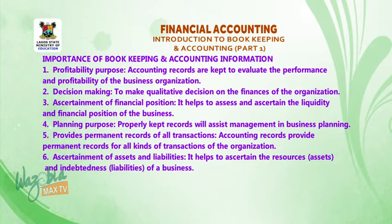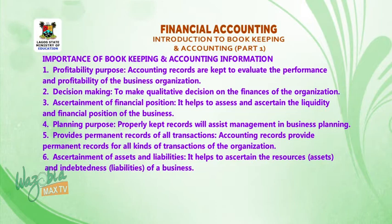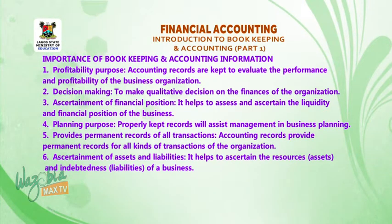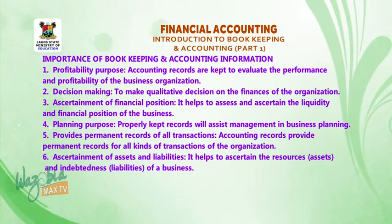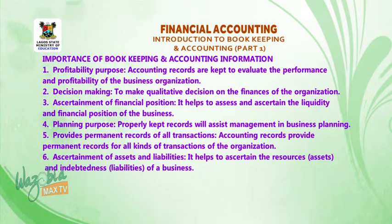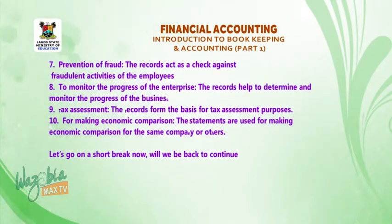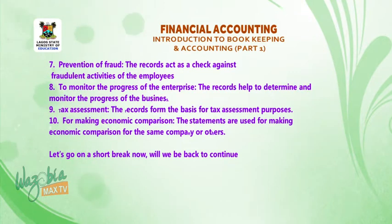Four, planning purpose: properly kept records will assist management in business planning. Five, permanent records: accounting records provide permanent records for all kinds of transactions of the organization. Six, ascertainment of assets and liabilities: it helps to ascertain the resources (assets) and indebtedness (liabilities) of a business. Seven, prevention of fraud: the records act as a check against fraudulent activities of the employees.